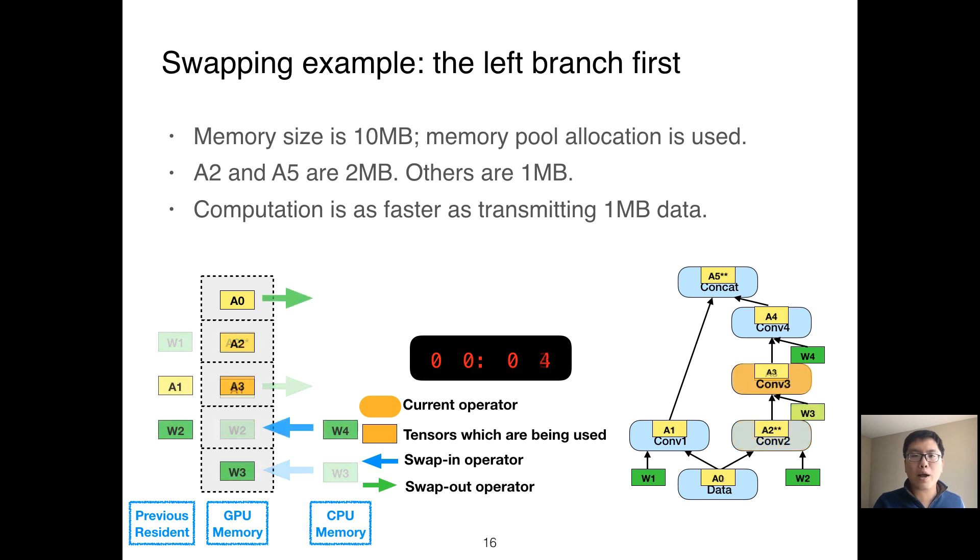The green arrow here represents the swap-out operator. At T4, A1 is already swapped out and W2 can be deallocated. We still have enough memory. We can use a similar strategy to run T5 and T6. Now we finish all the execution; it takes six units of time. Although we have done some swaps, all the swaps overlap with computation, so no extra overhead occurs.